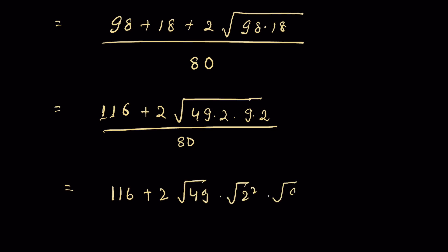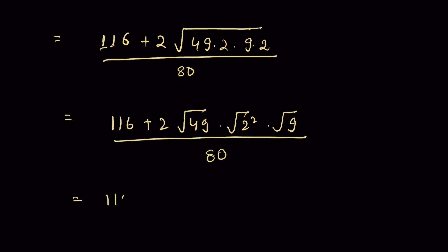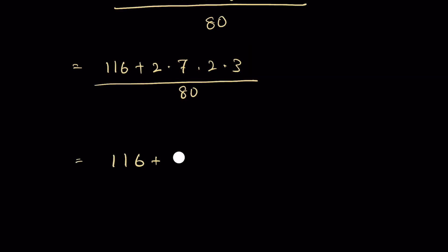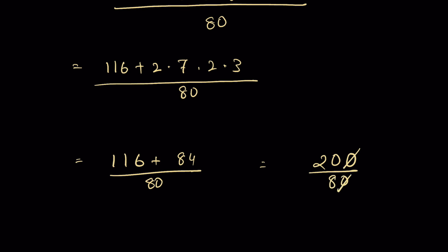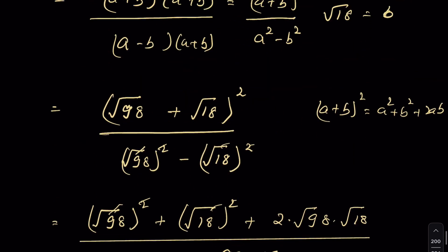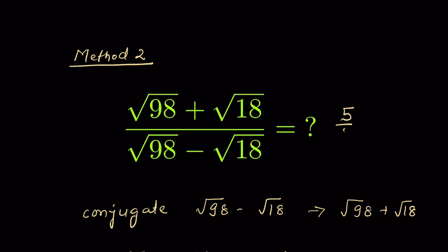The expression becomes (116 + 84) / 80 = 200/80. Cancelling the zeros gives 20/8, which simplifies to 5/2 — the same answer as Method 1. Both methods give 5/2. Which method did you like more? Let me know in the comments. Thanks for watching!